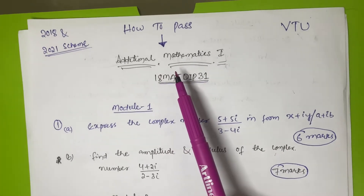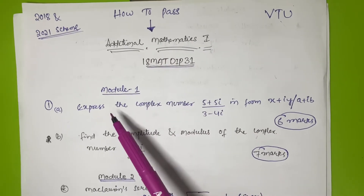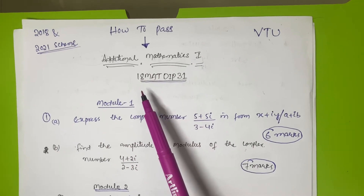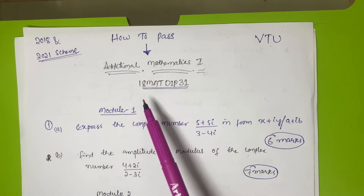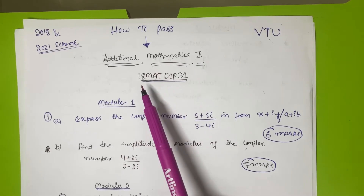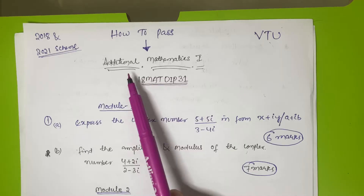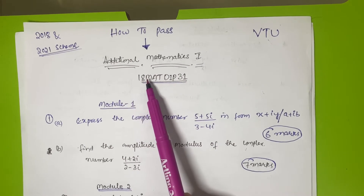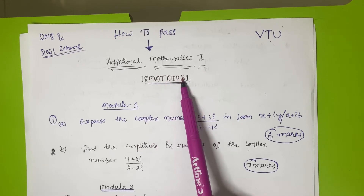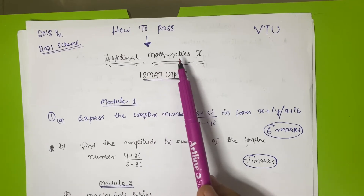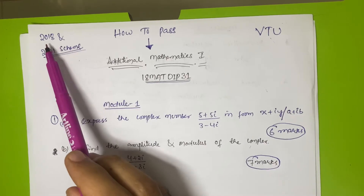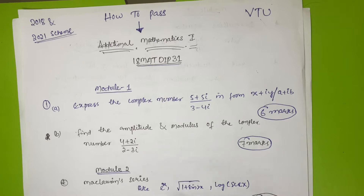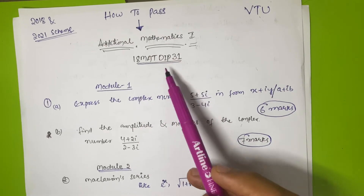Hello my dear friends, welcome back to my YouTube channel. Today I have an incredibly valuable topic to share with you all: how to pass mathematics with flying colors. In this video we will discuss all the things especially for diploma students - that is Additional Mathematics, subject code 18 MAT DIP 31. This video is especially for the 2018 and 2021 scheme.